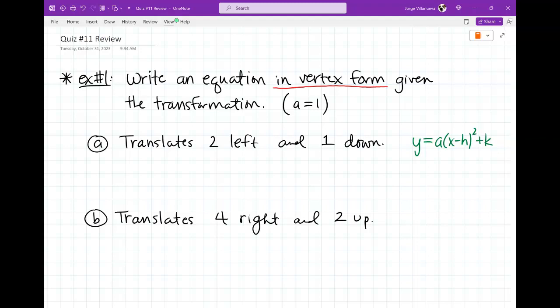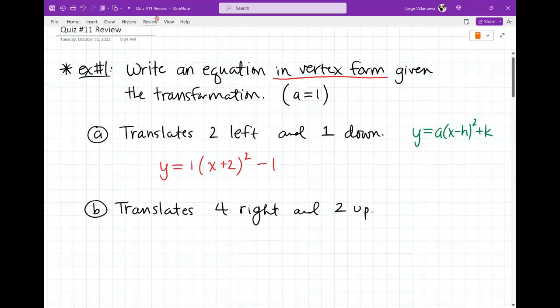So y equals A times x minus H quantity squared plus K. And they tell me that I should let A equal to one all the time. So we know that's going to be a one and translates two left and one down. Okay, so I'm going to go ahead and start writing it. Y equals A, which they say is going to be a one, times X. Now, my H says two to the left, so I should put what? Plus two, right? Squared. And one down, I put minus one. Okay, so there you go, you're done with that problem. It's supposed to be really easy. And on the quiz it's supposed to be really easy too. They're not trying to make it difficult for you guys.